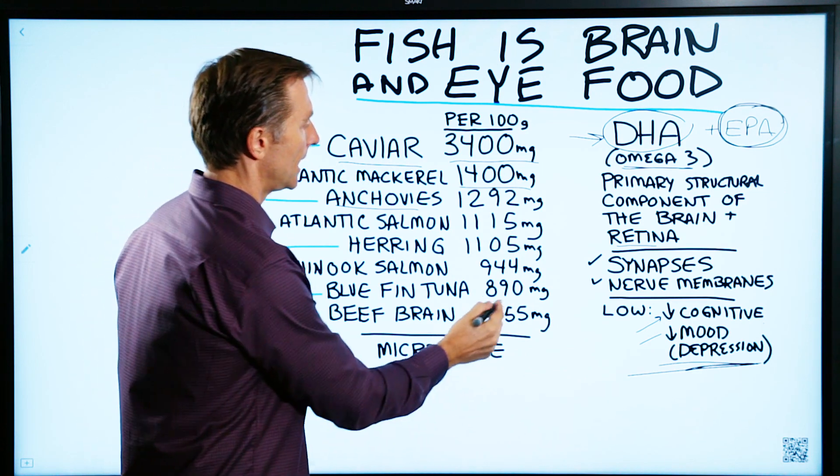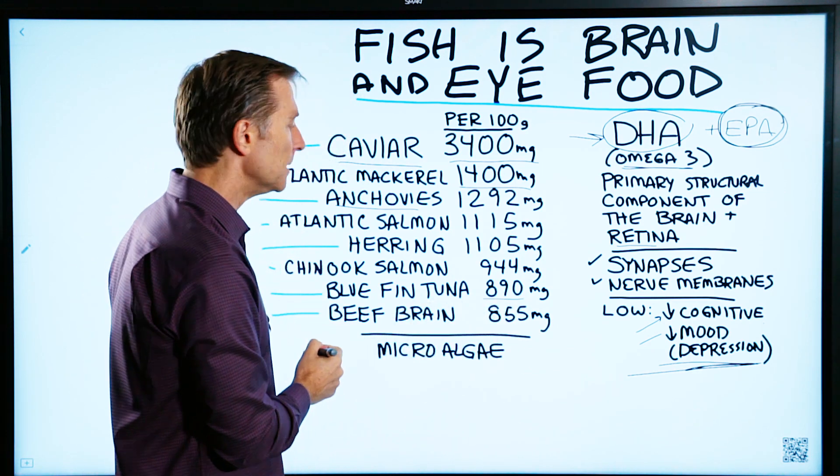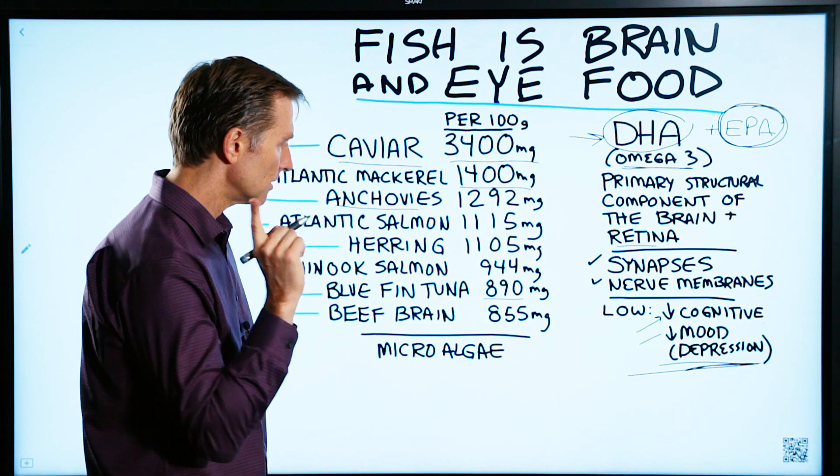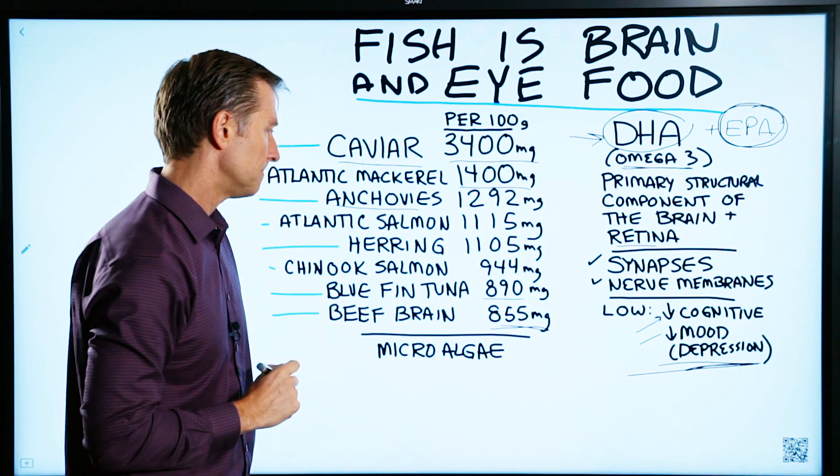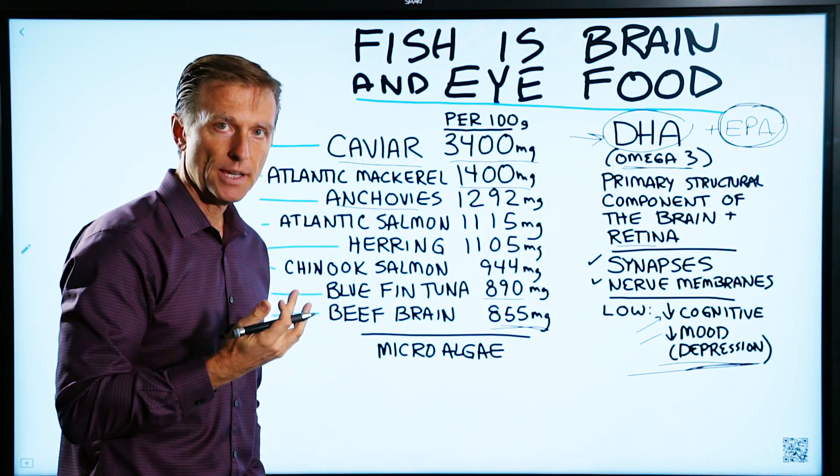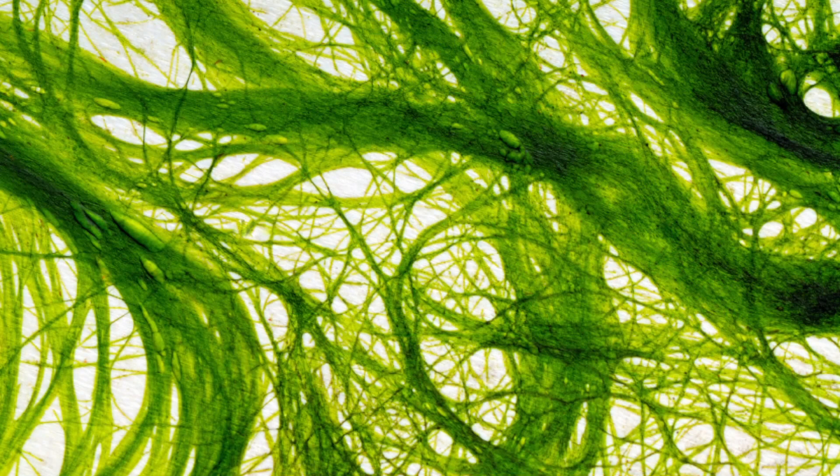Bluefin tuna, 890. Beef brain at 855 milligrams per 100 grams. If you're a vegan and you don't do this, you can do microalgae.